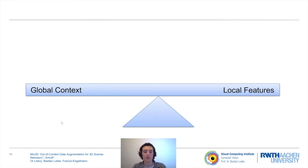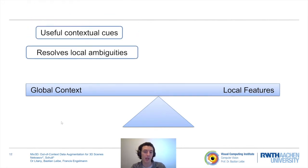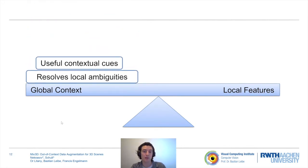We illustrate how Mix3D balances between global context and local features. Global context helps reasoning about object semantics as it resolves local ambiguities and provides useful contextual cues, such as spatial arrangements of objects. Current state-of-the-art methods, such as sparse convolutional approaches, have large receptive fields and are therefore able to capture the global context of the entire scene.